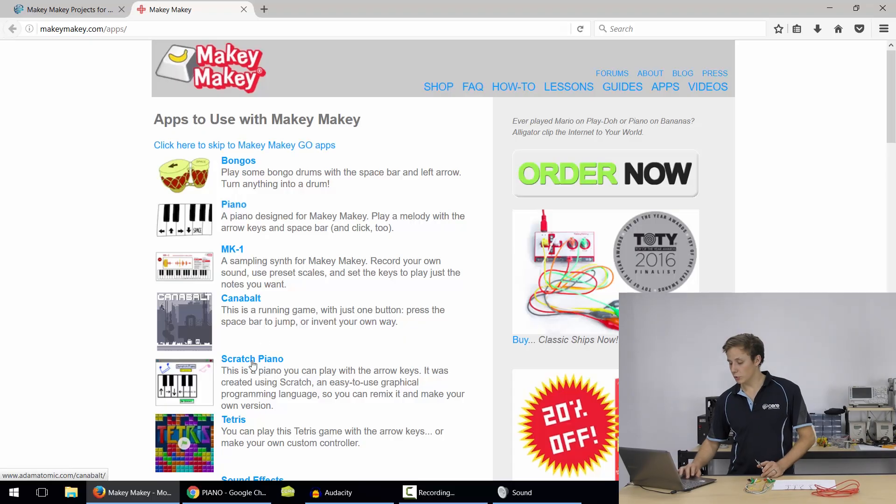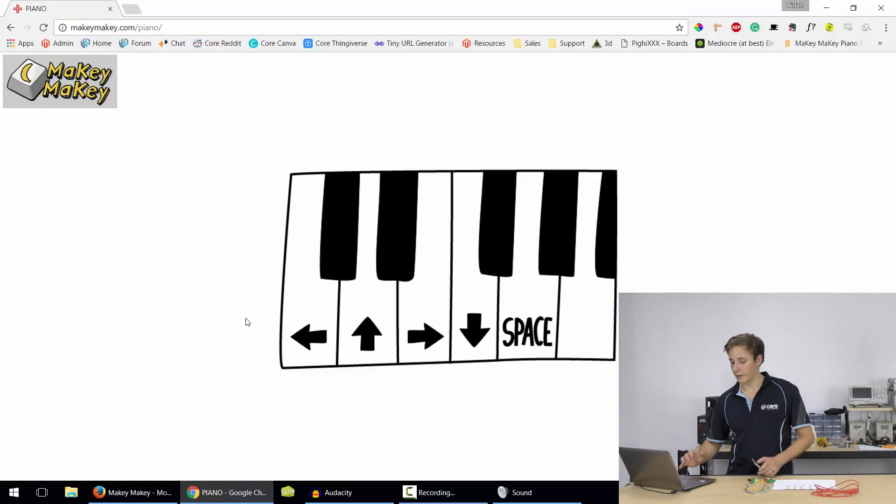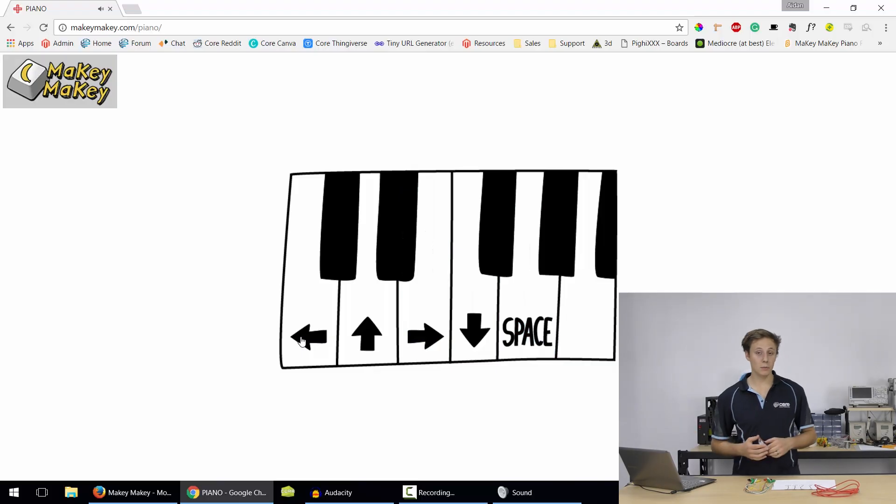Now I'm switching to Google Chrome for this because it works a little bit better and you can see the piano here. It's fantastic and the arrow keys make sound which is really cool. So we're going to use the arrow keys and the space bar on our Makey Makey to trigger these.